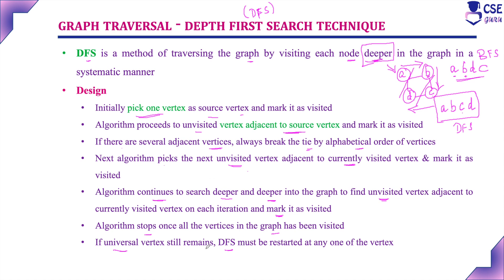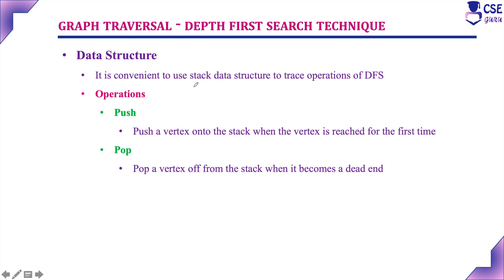The convenient data structure to trace the operations of DFS traversal is the stack data structure. In BFS traversal, we use a queue data structure. Stack operations are push and pop. We push a vertex onto the stack when we reach it for the first time. When we have visited the vertex and considered all its adjacent vertices and it has reached a dead end, we pop that vertex from the stack.